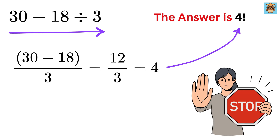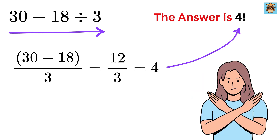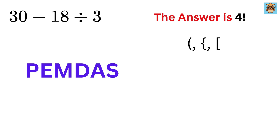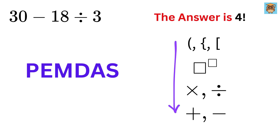But wait a minute. We know that this isn't the correct way to evaluate the expression if we're following proper math rules. According to the order of operations, sometimes remembered with the acronym PEMDAS, which stands for parentheses, exponents, multiplication and division from left to right, and then addition and subtraction from left to right, we must perform these operations in the given order.